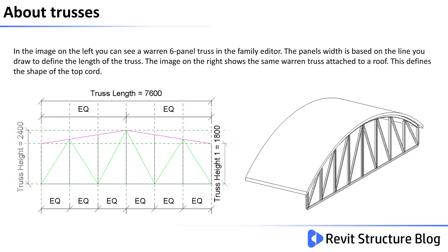In the image on the left you can see a Warren six panel truss in the family editor. The panel width is based on the line that you draw to define the length of the truss. The image on the right shows the same Warren truss attached to a roof, which defines the shape of the top chord. You can attach the top and bottom chord to floors and roofs.